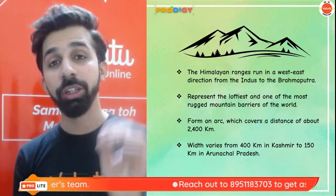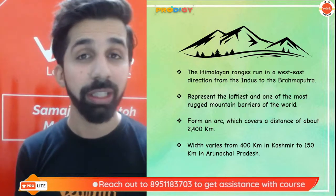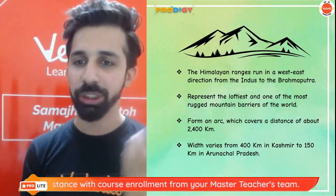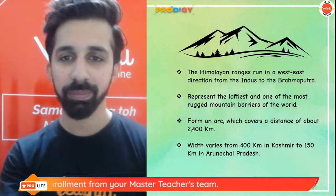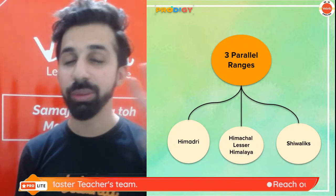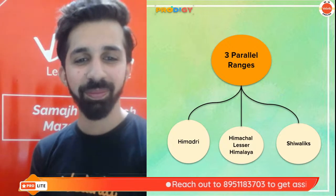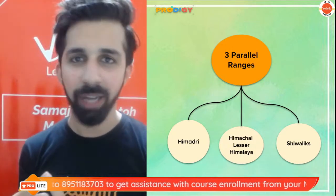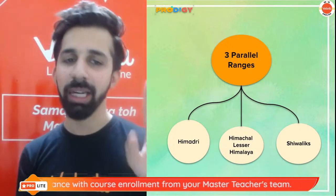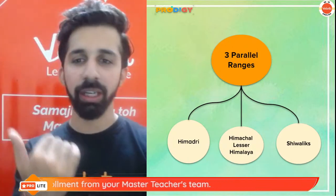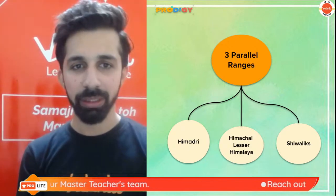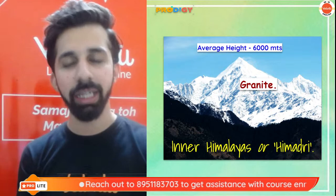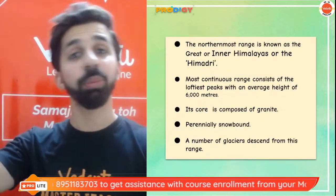The Himalayan mountain ranges are the loftiest in the world, extending from river Indus in the west to river Brahmaputra in the east. The length is 2,400 kilometers from west to east. The width ranges from 400 kilometers in Jammu and Kashmir to 150 kilometers in Arunachal Pradesh. The entire Himalayan range is divided into three parallel ranges: Himadri, Himachal (lesser Himalayas), and Shivalik — from north to south.